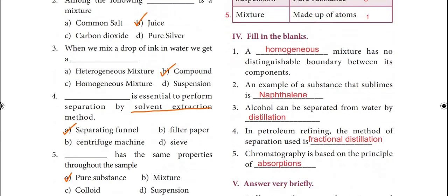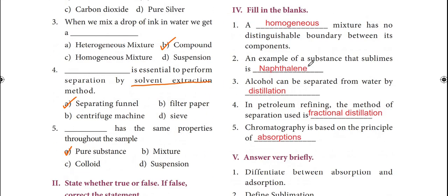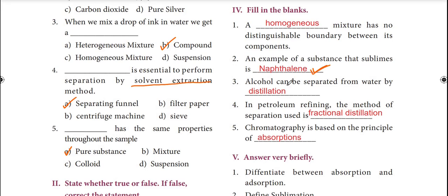Fill in the blanks. First: a homogeneous mixture has no distinguishable boundary between its components. Second: an example of a substance that sublimes is naphthalene. Third: alcohol can be separated from water by distillation.